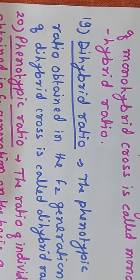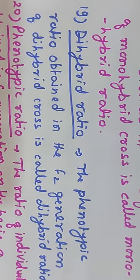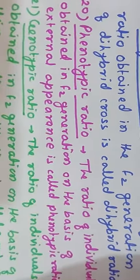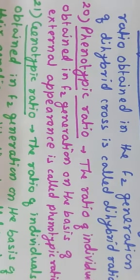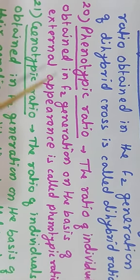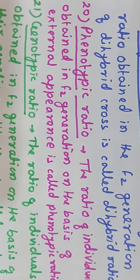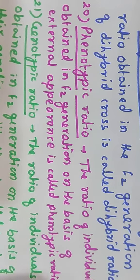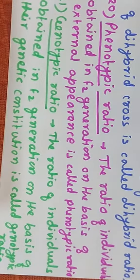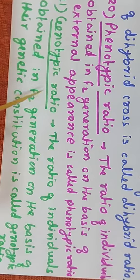Dihybrid ratio: the phenotypic ratio obtained in the F2 generation of a dihybrid cross is called the dihybrid ratio. Phenotypic ratio is based on external appearance. In the monohybrid cross the phenotypic ratio is 3:1. If we look at the genetic makeup — whether the individual is homozygous or heterozygous — that ratio is called the genotypic ratio.